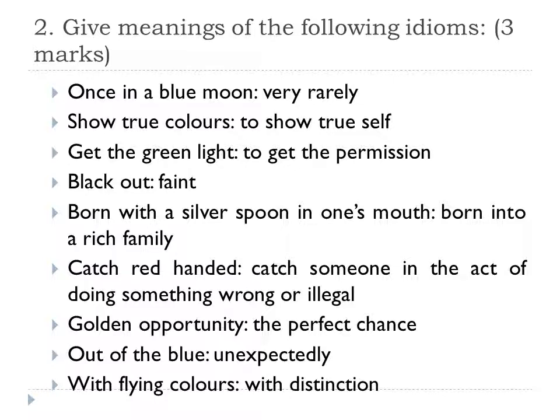After that: show true colors — it means to show your true self. Next: get the green light — in the traffic signal, when you get the green light it means you can move ahead, you have got permission. Hence, to get the green light means to get permission. Blackout means to faint — the normal meaning is to faint.